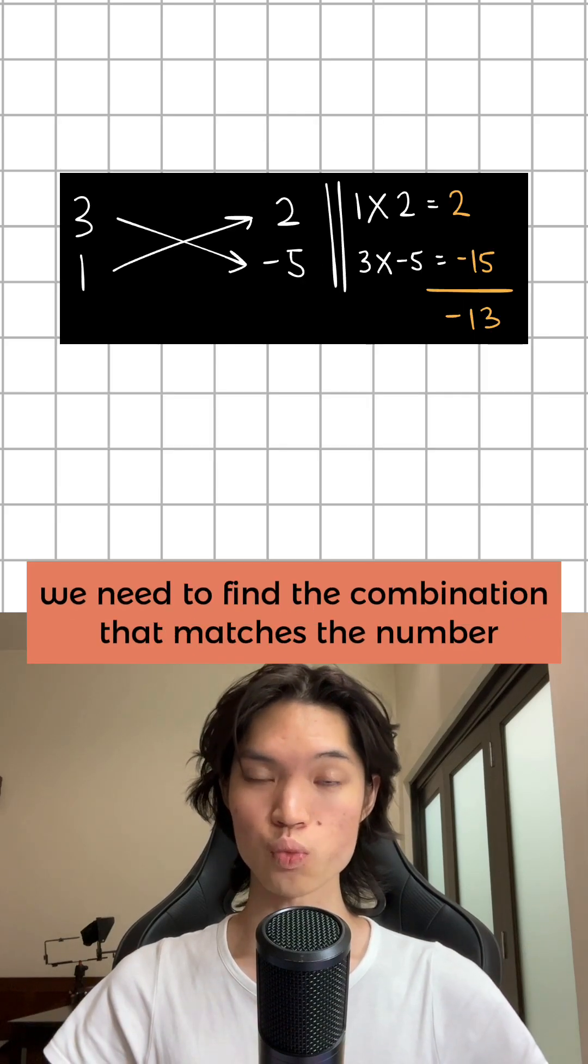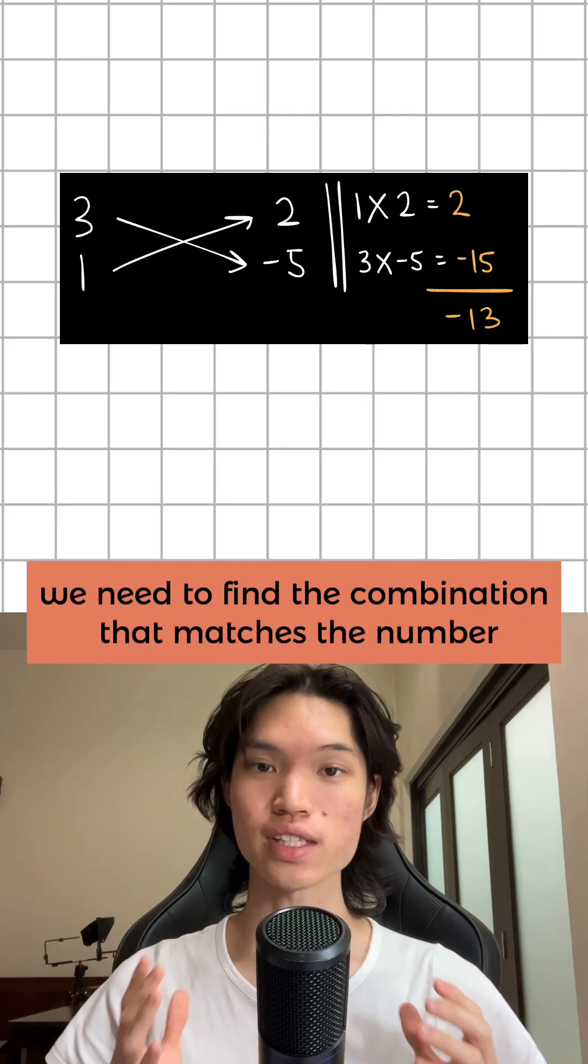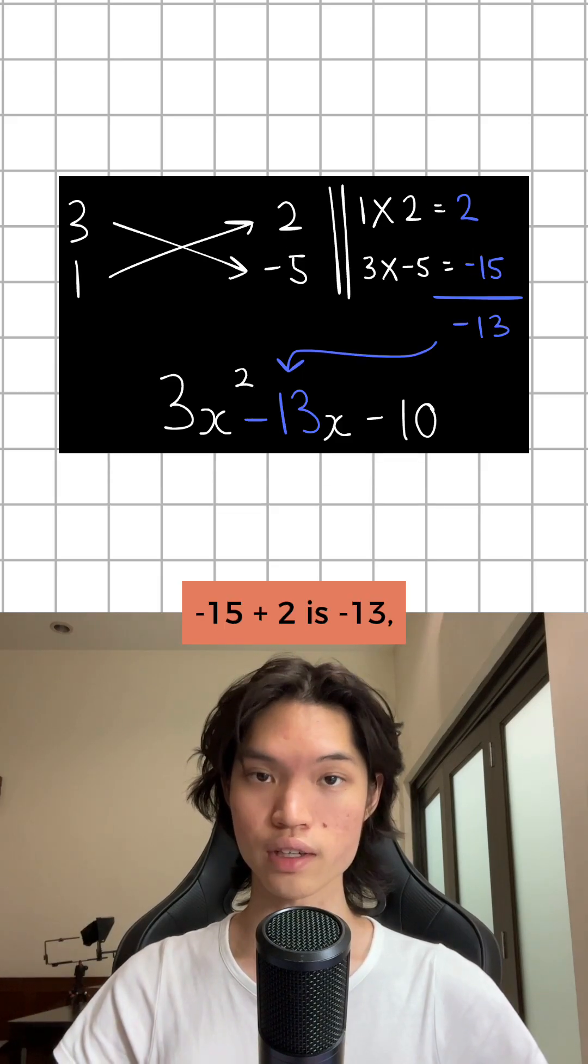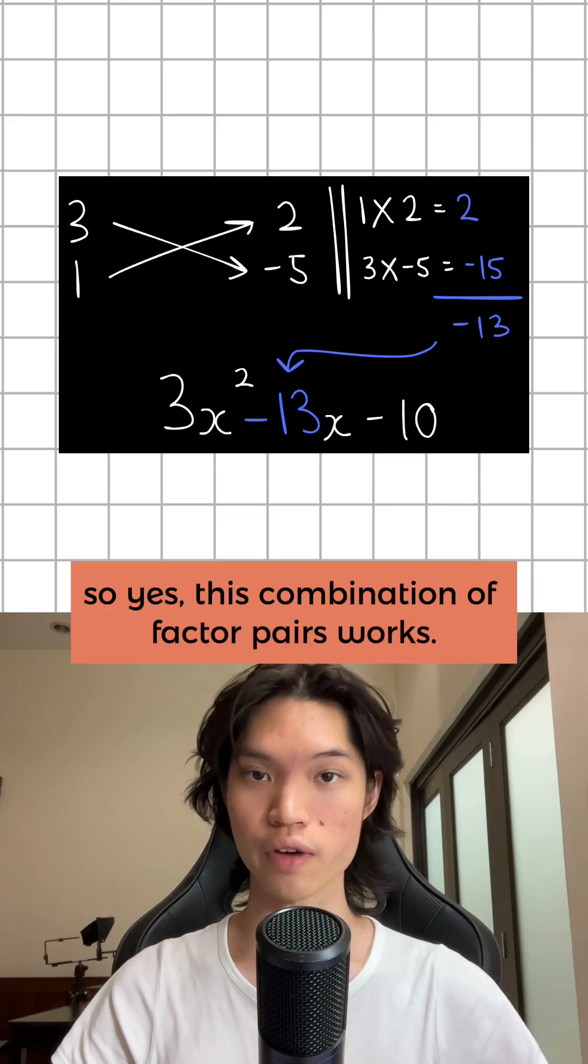When we add up these results, we need to find the combination that matches the number beside the x over here. Negative 15 plus 2 is negative 13, so yes, this combination of factor pairs works.